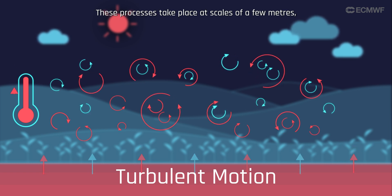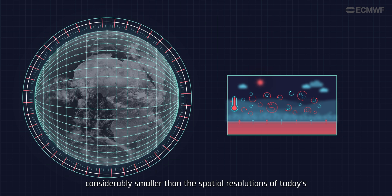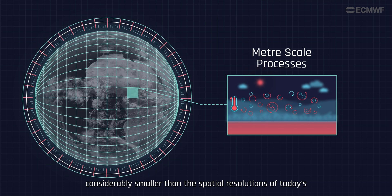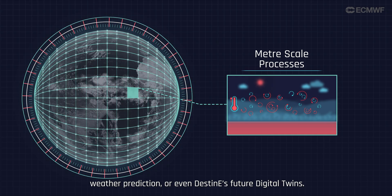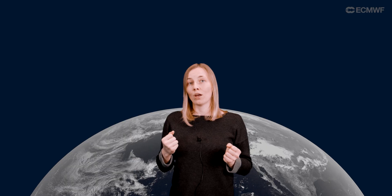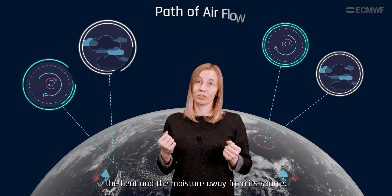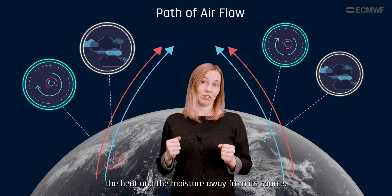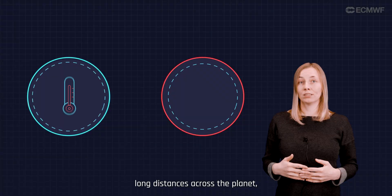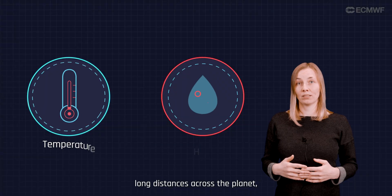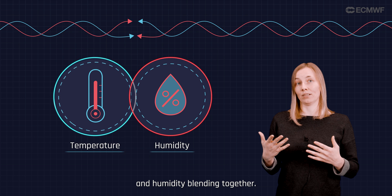These processes take place at scales of a few meters, considerably smaller than the spatial resolutions of today's weather prediction, or even Destination Earth's future digital twins. Moreover, large-scale weather systems can carry the heat and moisture away from its source. This means that there is an effect over long distances across the planet, with air streams of different temperature and humidity blending together.